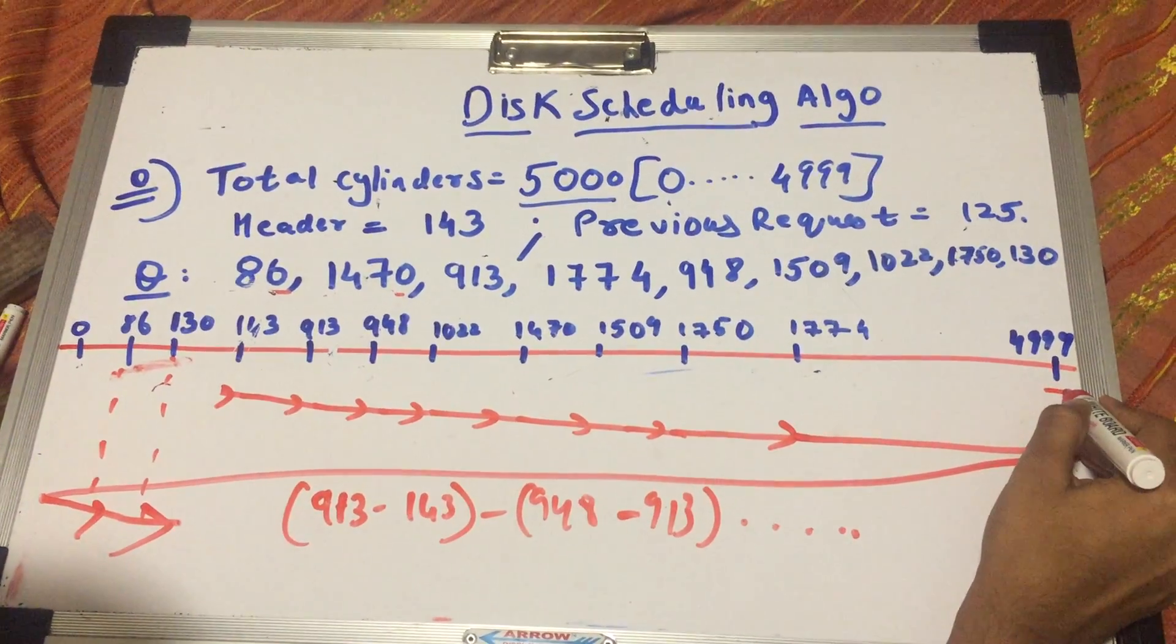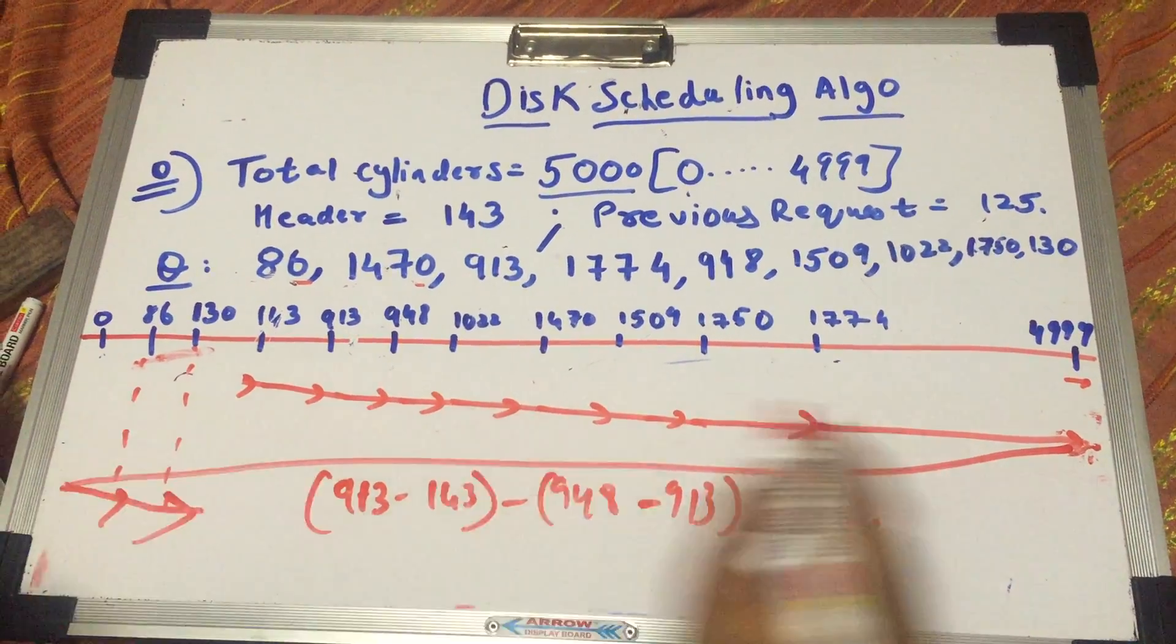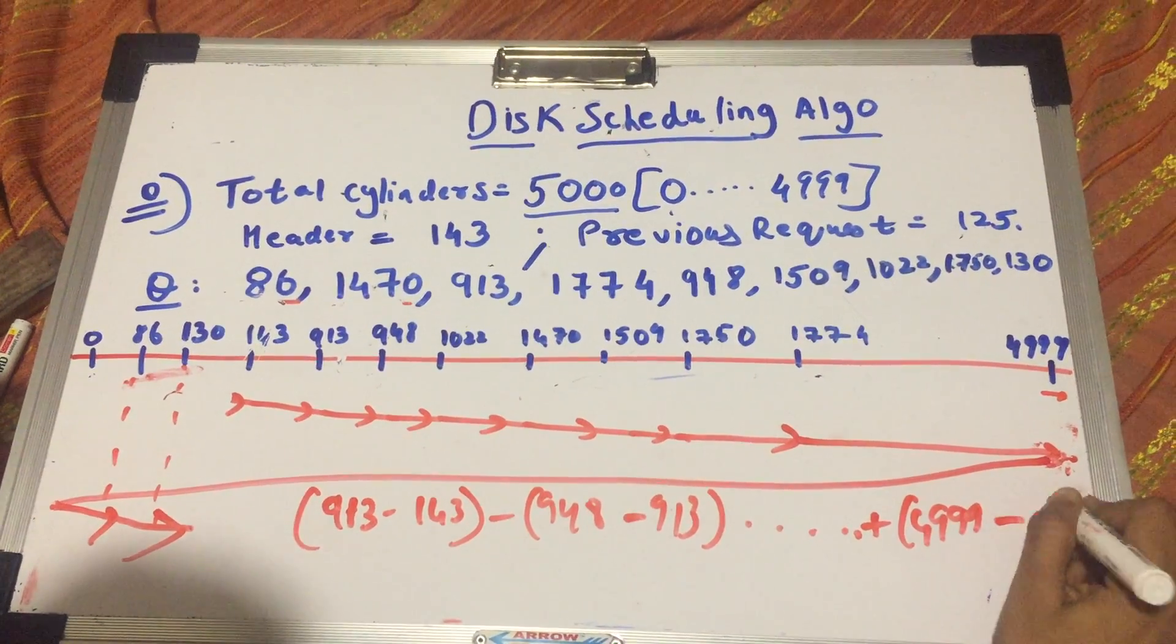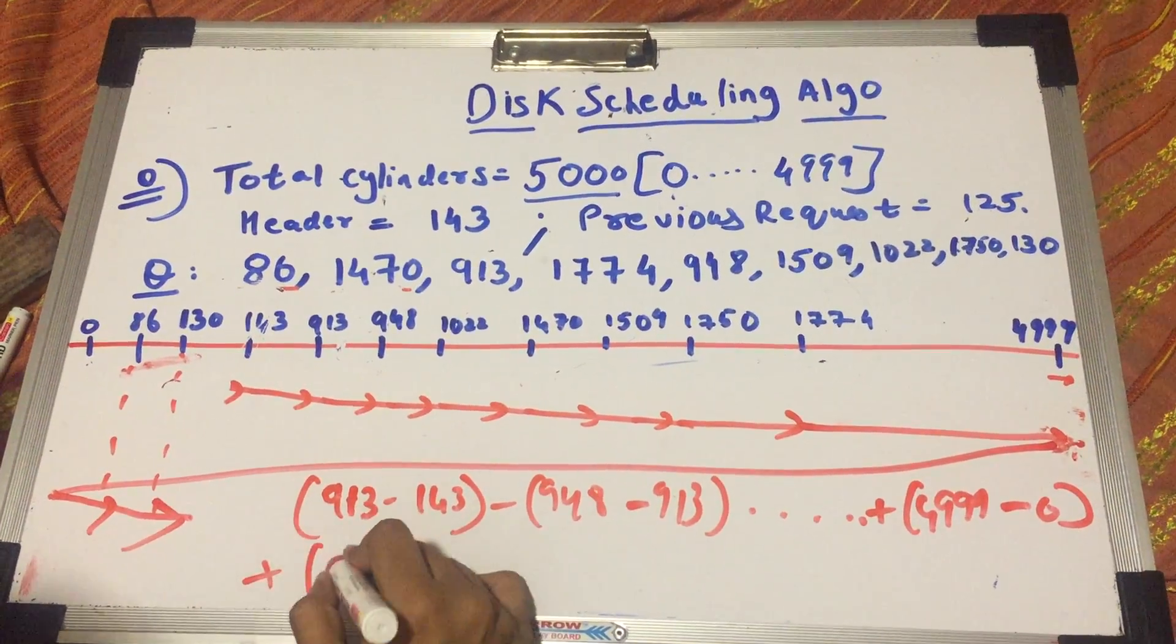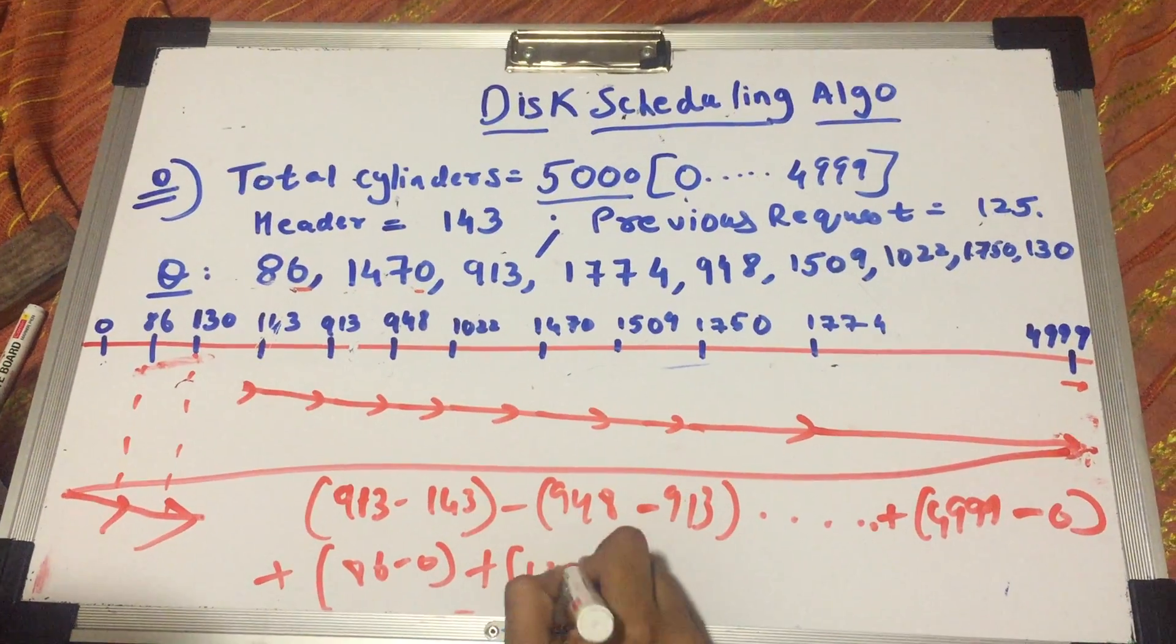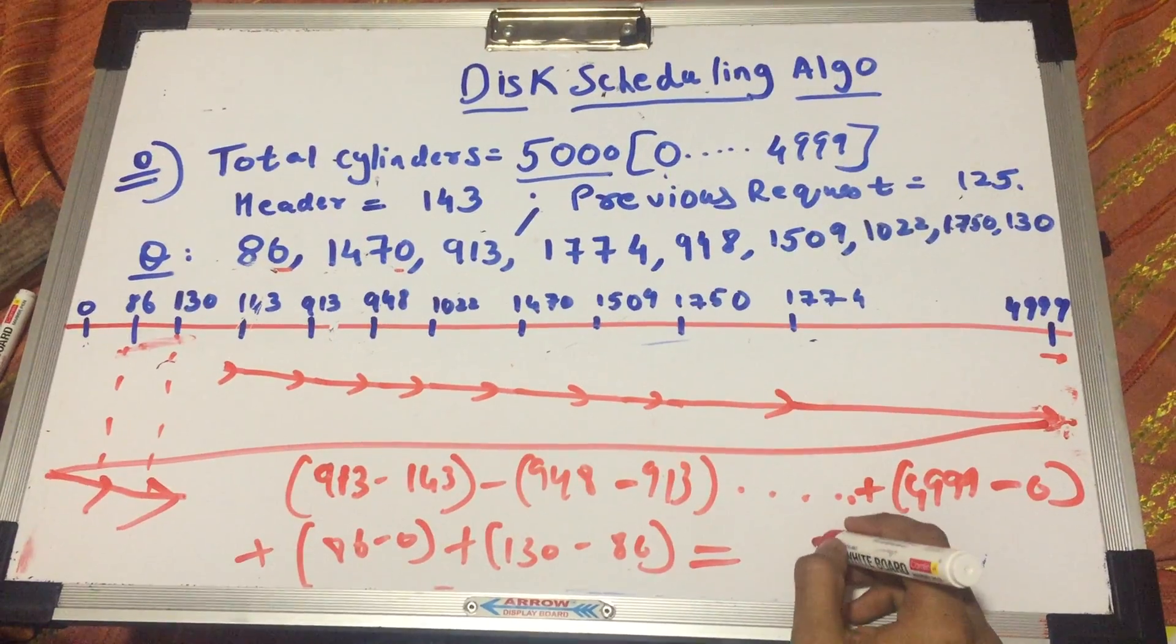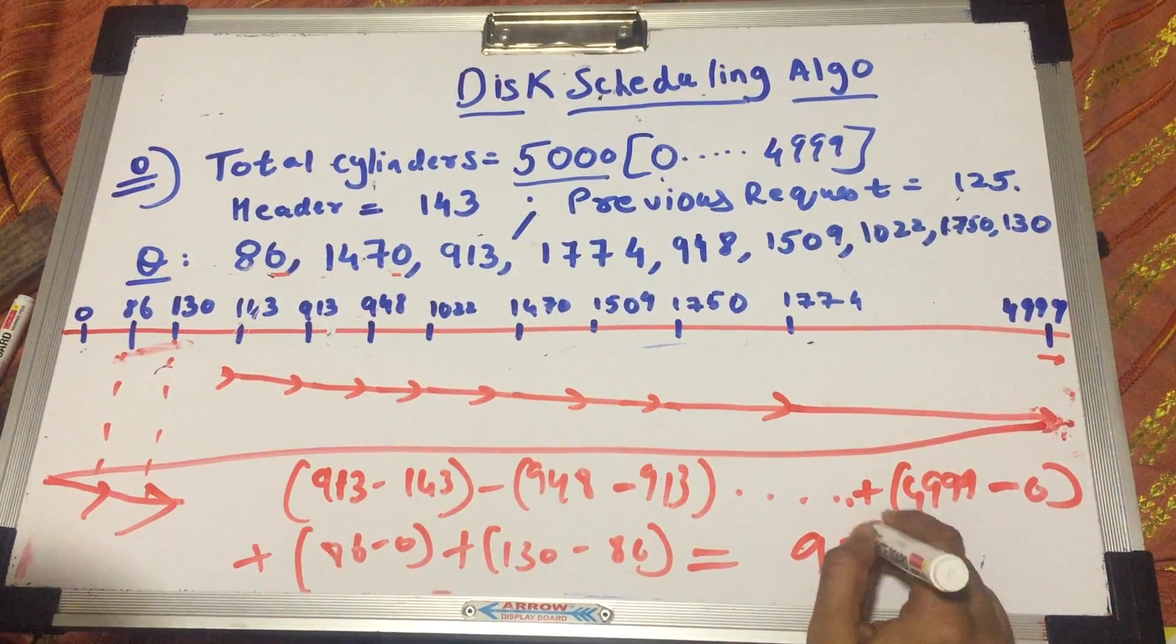Then you reach at 4999 and from 4999 it goes up to 0. So you add 4999 minus 0, and then you do 86 minus 0 plus 130 minus 86. So the total C-SCAN time comes to 9813.